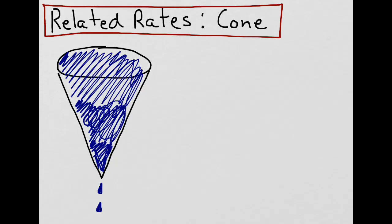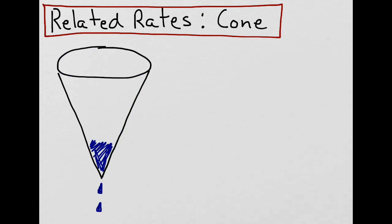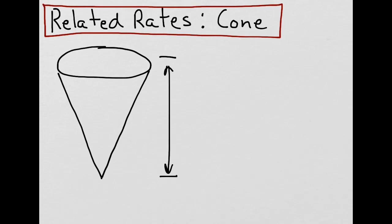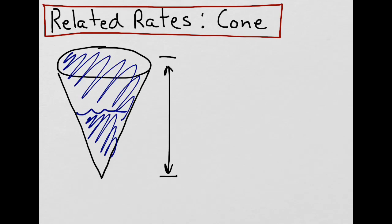Let's say that we had a cone filled with water and that over time water drained out of the cone at a constant rate until it was empty. We're interested in finding the height of the water at various points and how it's changing over time — at the end when there's no water, in the middle, and at the beginning when it's full. So we're interested in finding the change in height with respect to time at these various points.